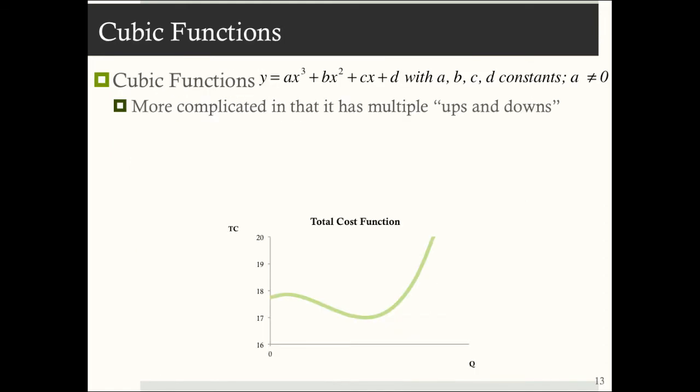Then we have cubic functions, which are of the form y is equal to ax cubed plus bx squared plus cx plus d, where a, b, c, and d are now constants. And when we're talking about cubic functions, we can't have a equaling to zero, because if a equals zero, our cubic function would just become a quadratic function. Now cubic functions are a lot more complicated. They have multiple ups and downs. But most often, you'll come across cubic functions when we're talking about cost functions. So a lot of time in your intermediate microcourses, you'll talk about cubic cost functions. And they often look like this, where they start to rise in the beginning of output, then fall, and then begin to rise again.